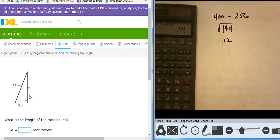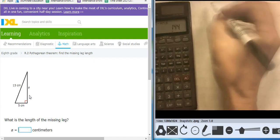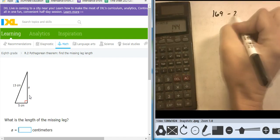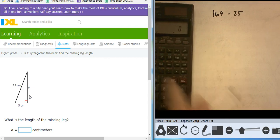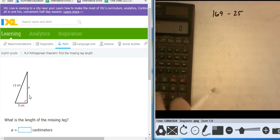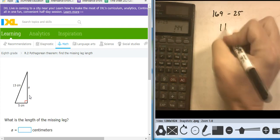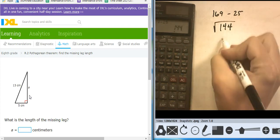This is going to be 13 squared minus 5 squared, so 169 minus 25. That's going to take me to 144. I take the square root of that, takes me to a 12.